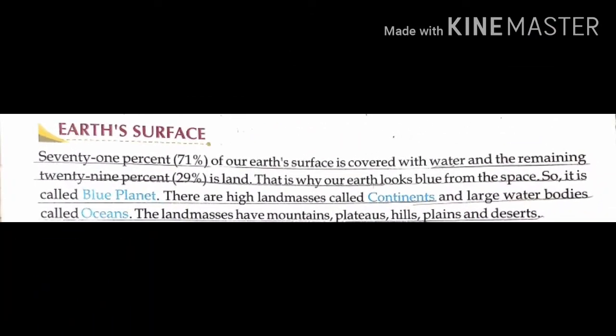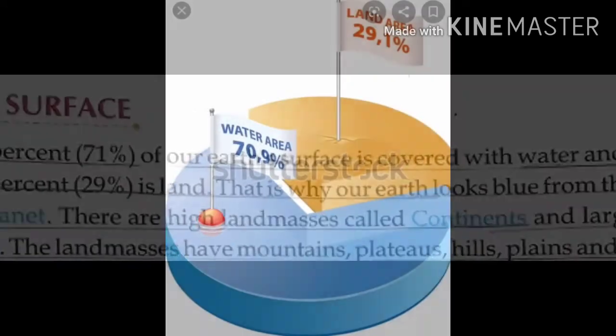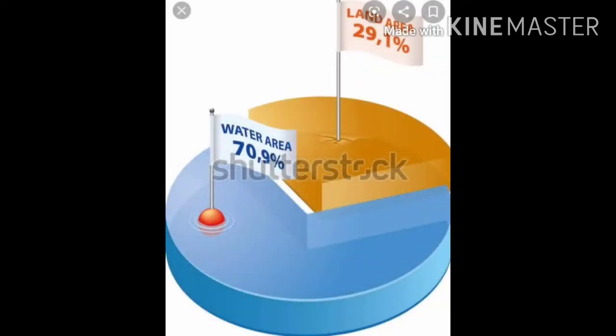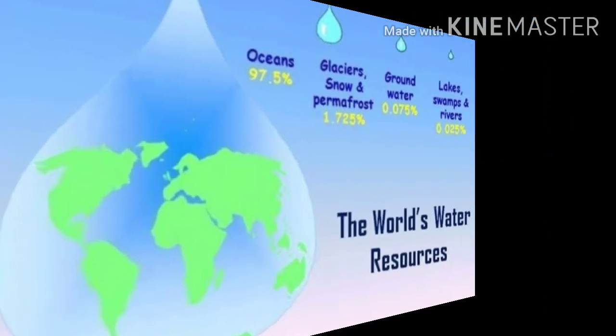Now the next topic is earth surface — how much is water and how much is land? You may know that earth is also called the blue planet. But why? Because 71% of earth's surface is covered with water and the remaining 29% is land. This 71% water can be present in the form of lakes, oceans, glaciers, etc.